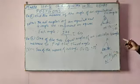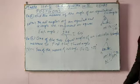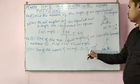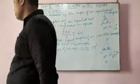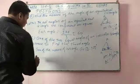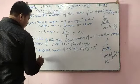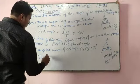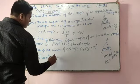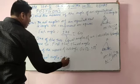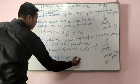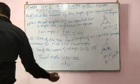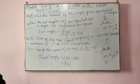Because the two angles are equal, two equal angles measure 50 plus 50 degrees equals 100 degrees. Therefore, the third angle is equal to 180 minus 100, which means the third angle measures 80 degrees.